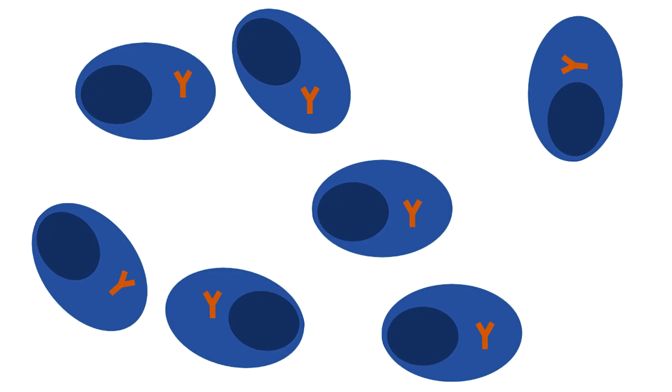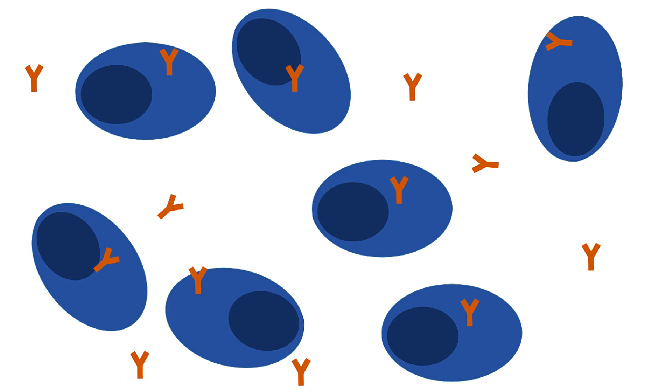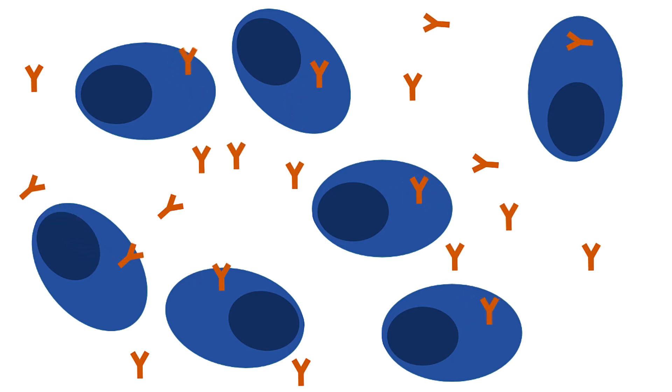As you might imagine there are going to be loads more antibodies floating around than there are normally, and all of these antibodies are going to be exactly the same, because they're all coming from the cancerous clones of the original plasma cell that went wrong and became cancerous.